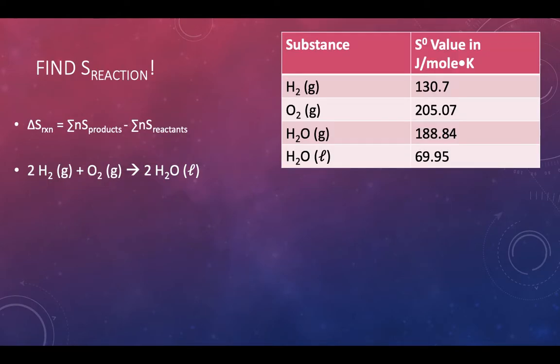So if we wanted to find the delta S of that reaction, there's a data table there with some S values provided. One of the things that they try often to do on the AP exam to try and trick you is to give you data that you don't actually need. So when you look at that reaction, we have two moles of hydrogen gas, one mole of oxygen gas turning into two moles of liquid water, and the data table has a line there for gaseous water. We don't care about that value for this particular reaction.